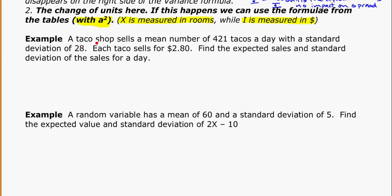Already I know I'm talking about 421 tacos, but I'm looking for sales. That's a change of units from tacos to dollars, so I know I can use a given formula. Let's think of what we've got here. My random variable here is the tacos, and the mean number of tacos is 421 tacos.